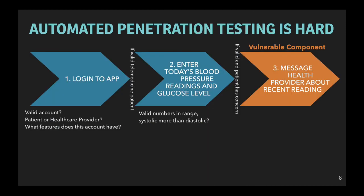Rivulet effectively performs guided automated penetration testing. However, automated testing is hard, especially in applications that have complex workflows that must be followed in order to reach a vulnerability. Consider, for instance, a hypothetical healthcare application. The vulnerable component here, used to message a healthcare provider about a recent telemedicine reading, could only be observed after logging in as a patient with telemedicine monitoring and submitting valid but abnormal blood pressure or glucose-level readings. It's extremely difficult for an unguided test generator to satisfy this kind of complicated workflow, and hence we focus on a better source of guidance.